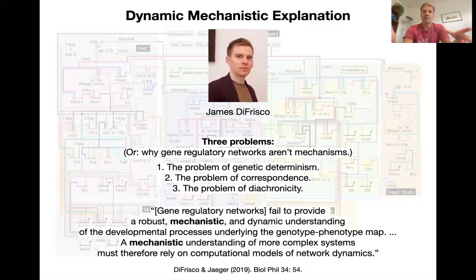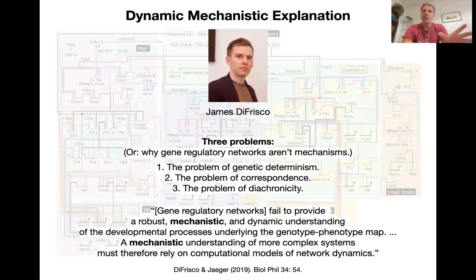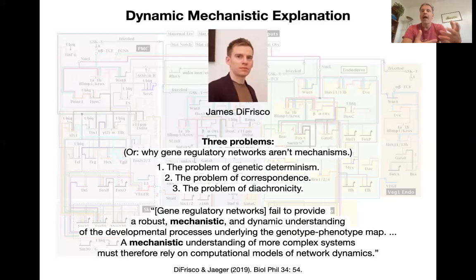Gene regulatory networks fail to provide a robust mechanistic and dynamic understanding of the developmental processes underlying the genotype-phenotype map. A mechanistic understanding of more complex systems must therefore rely on computational models of network dynamics. In the next module, I'll introduce some of the basic approaches of dynamical systems theory — concepts such as attractors and their bifurcations — that help us explain dynamic behavior, staying at a conceptual level with no mathematics required. Then we'll connect those modeling efforts back to mechanistic causal explanations and ask how causality flows in complex systems involved in organismic development.